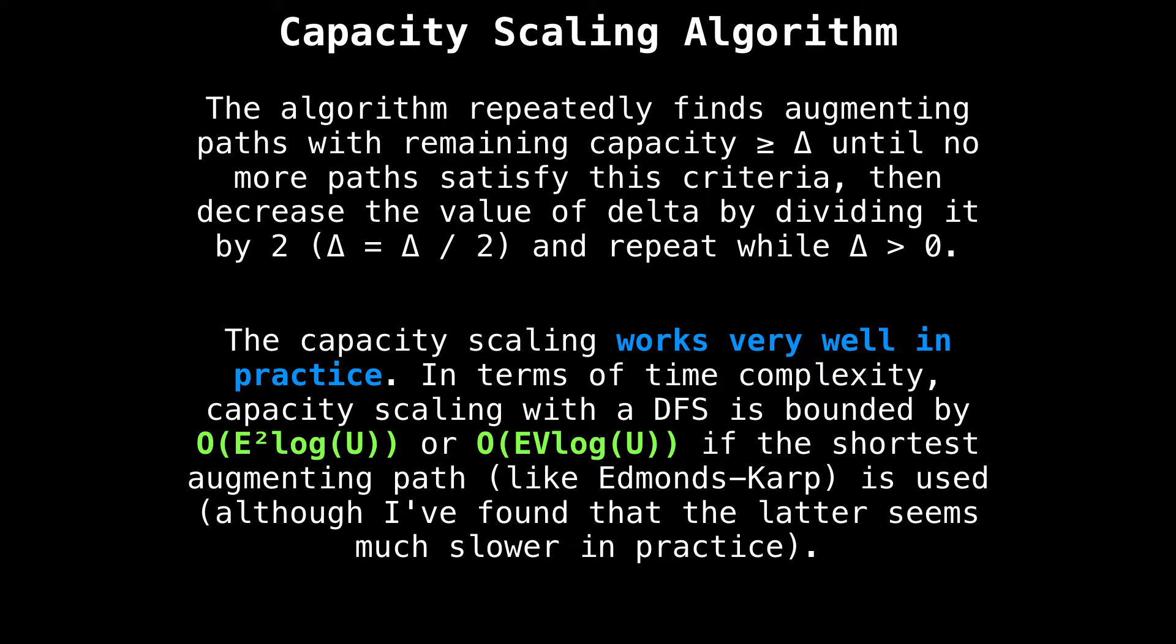So the reason you would want to implement capacity scaling is because it's very easy to code up and it works very well in practice. In terms of time complexity, capacity scaling with a depth first search runs in big O of E squared log U and in big O of E times V log U if the shortest augmenting path is found, which is basically Edmonds-Karp, but with capacity scaling, although I have found that to be much slower. So I would recommend the depth first search if you are going to implement this.